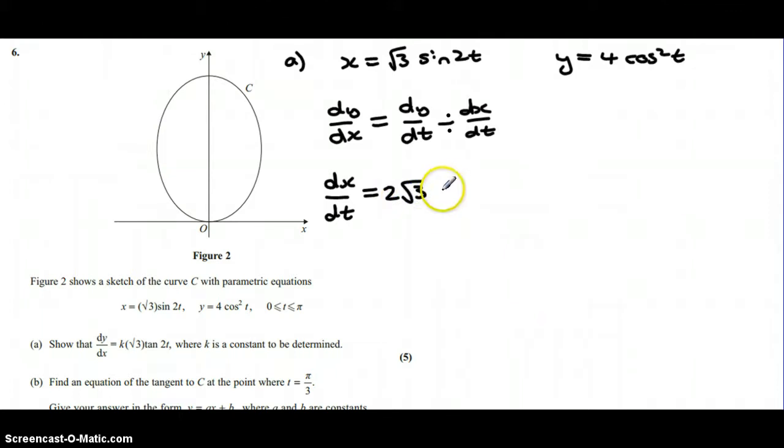For dy by dt, do the chain rule again, so bring the power down times it by the 4, and then if I differentiate the cos t which is inside the function, end up with minus sine t. So dy by dx will be minus 8 cos t sine t all over 2 root 3 cos 2t.